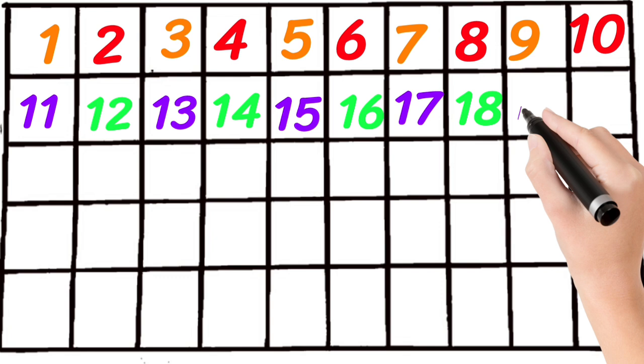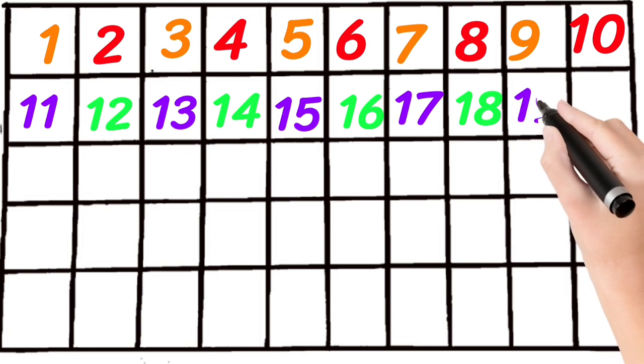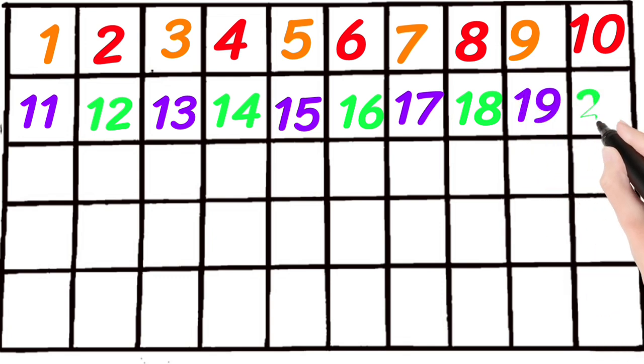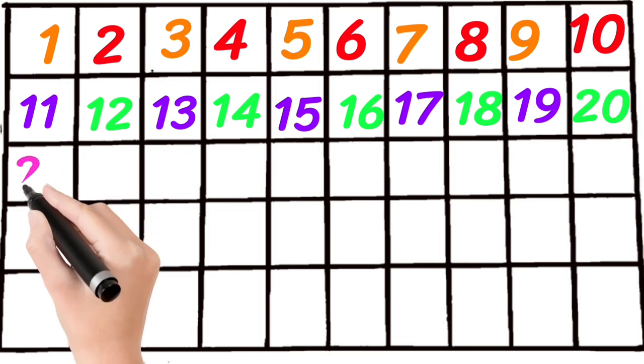One, nine, nineteen. Two, zero, twenty. Two, one, twenty-one.